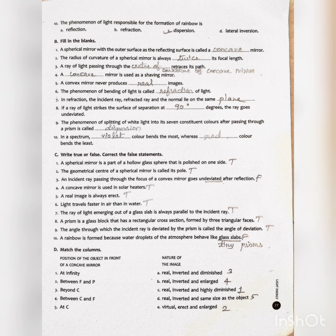Eighth one: If a ray of light strikes the surface of separation at dash degrees, the ray goes undeviated. Answer is 90 degree.